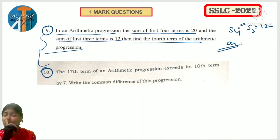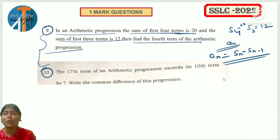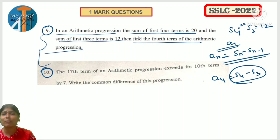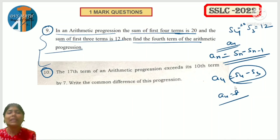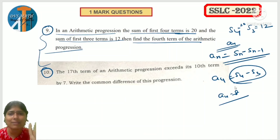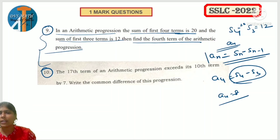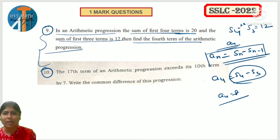Here we use the formula: SN minus S(N-1) which is equal to AN. So A4 equals S4 minus S3. S4 is 20, S3 is 12. Therefore A4 equals 20 minus 12, which gives A4 equals 8. Note this formula - there are chances it will be asked.